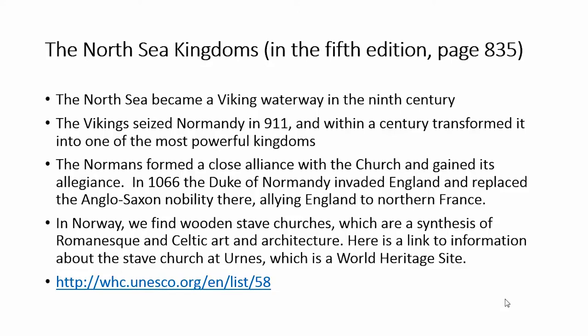I'm starting with the North Sea kingdoms because that is the trajectory of these people. Going back to Norway, we're going to see these wooden stave churches, which are found only in Norway and these northern kingdoms. We see some Romanesque style, but they're made entirely out of wood — very different because they're not making these stone arches. We also see Celtic art in architecture. I've given you a link to a stave church at Urnes, which is a World Heritage site.